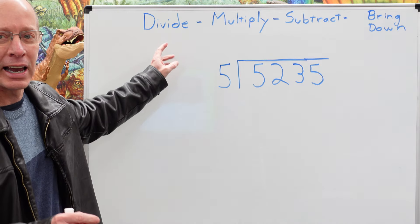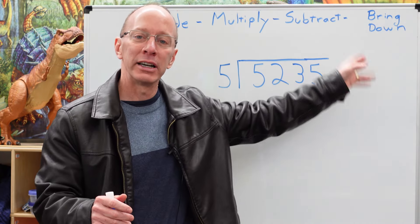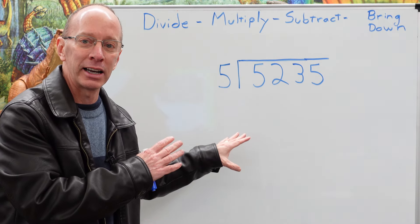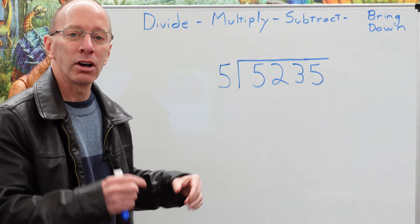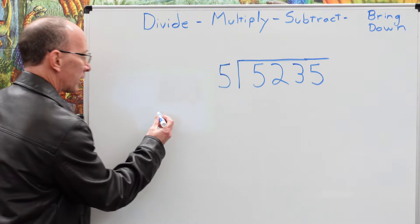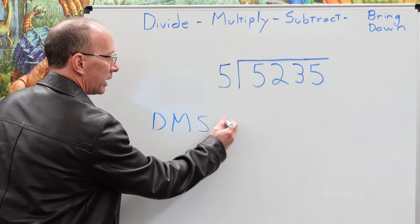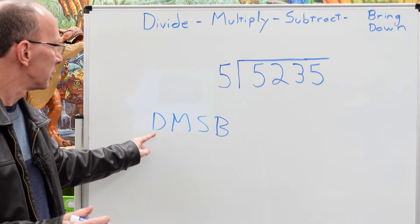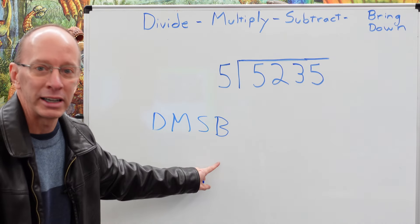First of all, you can see up here I have the words divide, multiply, subtract, and bring down. That's the process of dividing a big number like that. Now, if you have trouble memorizing this, you could always use the letters D, M, S, and B. This would be divide, multiply, subtract, and bring it down.